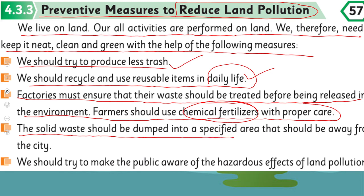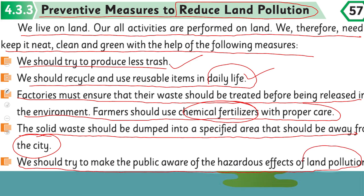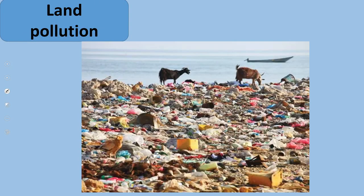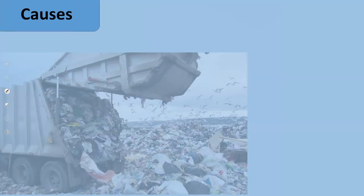Factories se jo waste dispose of kiya jata hai usko treat karna chahiye takke wo less toxic ho jaye. Iske alawa farmers ko chahiye ke wo chemical fertilizers ko proper care se use karein aur kam istemal karein. Solid waste should be dumped in a specified area that should be away from the city — aisi jagah pe dump karna chahiye jo abadi se door ho aur uska ek specific area ho. We should try to make the public aware of the hazardous effects of land pollution — awareness logon mein spread karni chahiye.